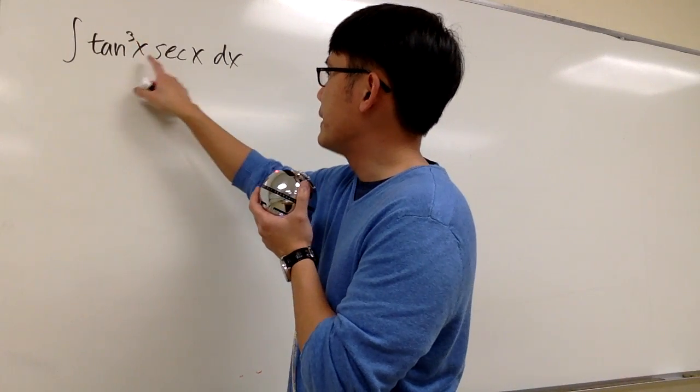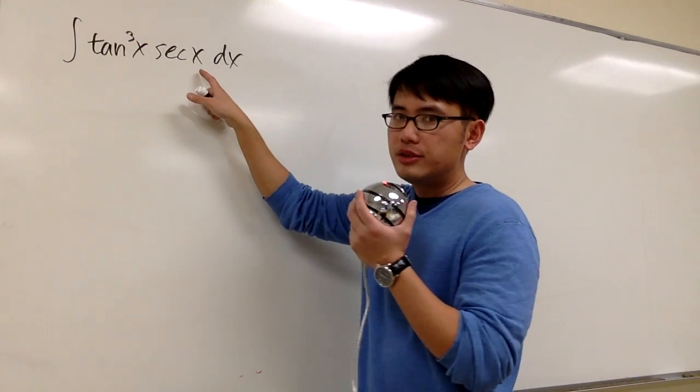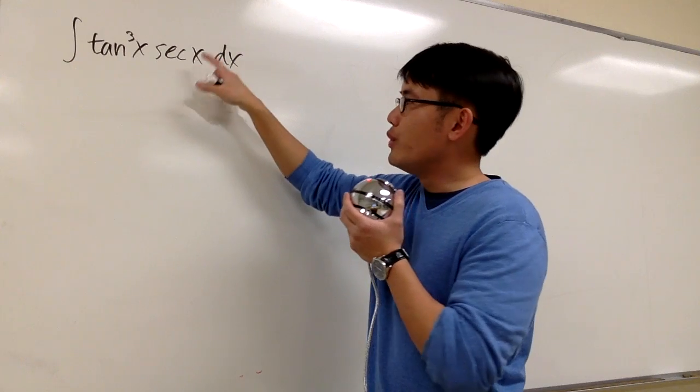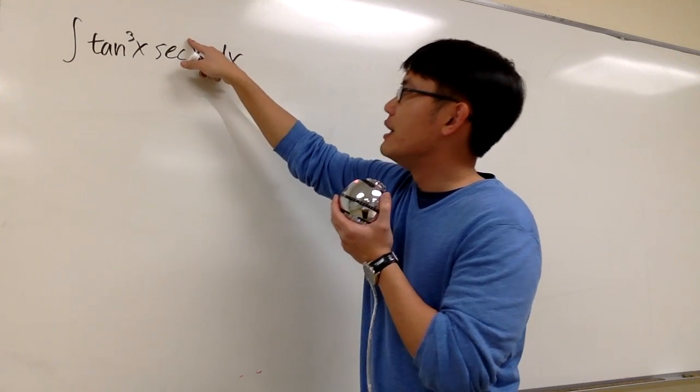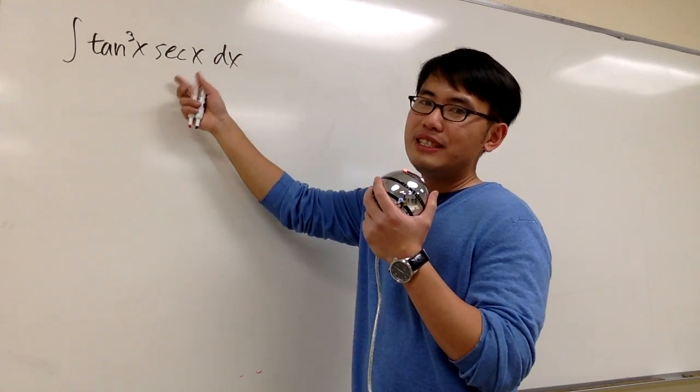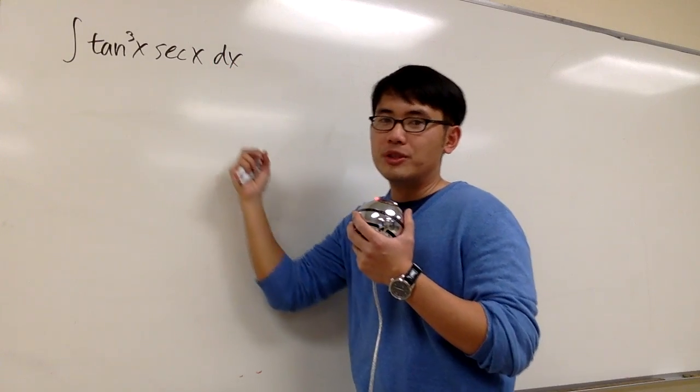Let's integrate tangent to a third power of x times secant x. As you can see, unfortunately, we only have secant to a first power. There's nothing much we can do with that, right? If we have secant to a second power, then this equation will be so much easier. But anyways, let's focus on tangent to a third power.